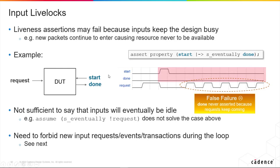So these are typical examples. We've got a request coming to the DUT, a start input, and a done output. We say if we have a start occurring, eventually we observe a done.